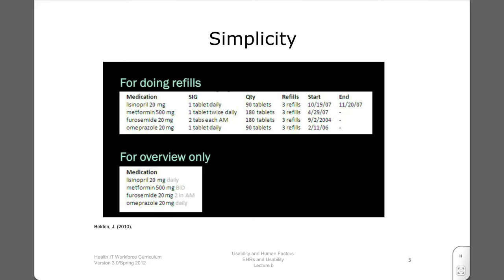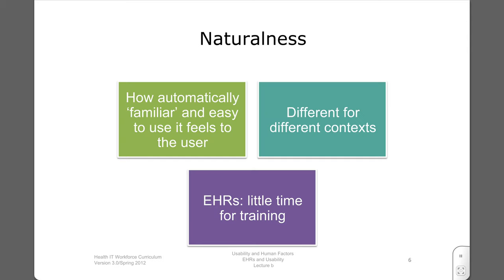We can have different information formats for different purposes. Naturalness is a property that makes a system seem familiar and intuitive to users. It can be different for different users, specialties, contexts, and purposes.